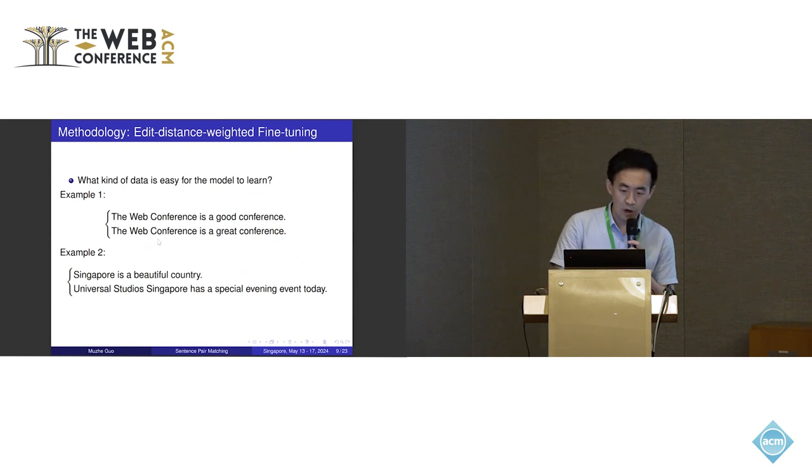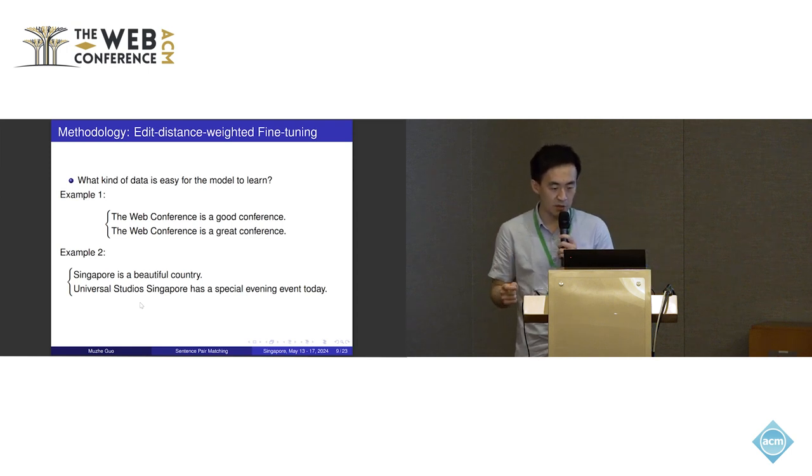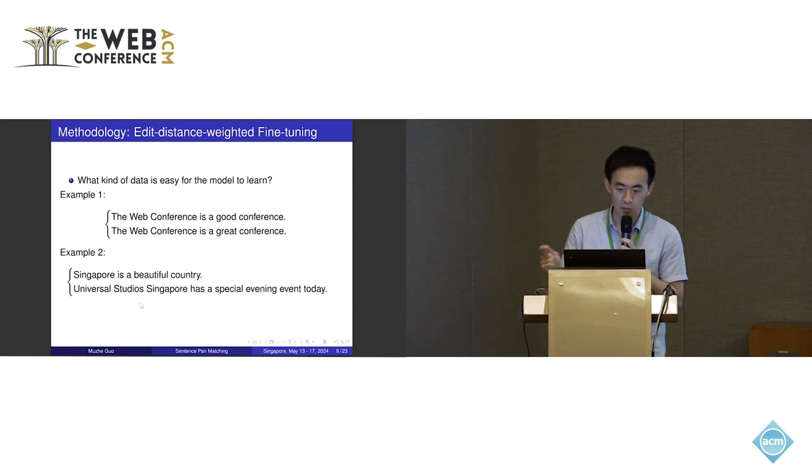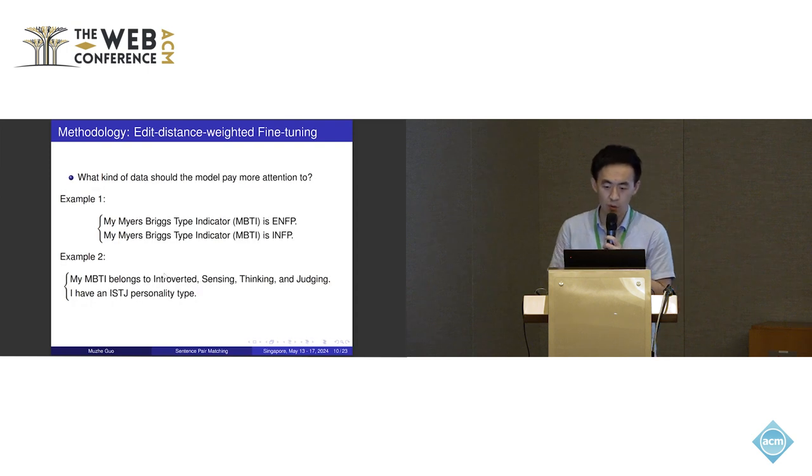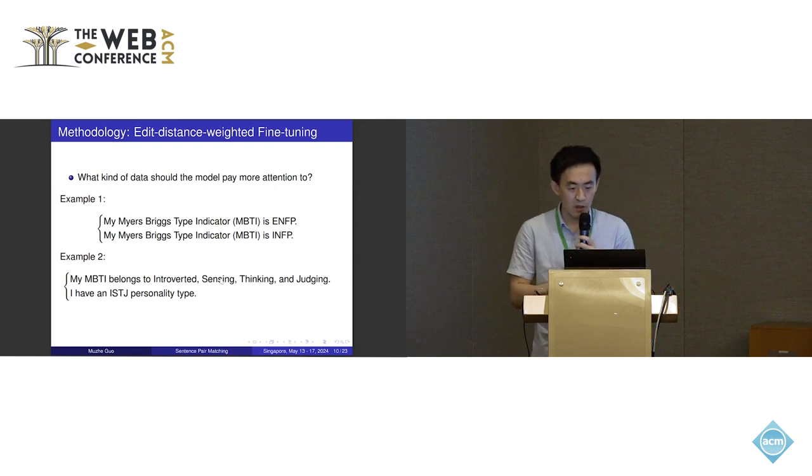In example two, 'Singapore is a beautiful country. Universal Studios Singapore has a special evening event tonight.' These two sentences have totally different textual features and totally different semantics. So it's also very easy for the model to learn because the model can easily know that the two sentences have different meanings.